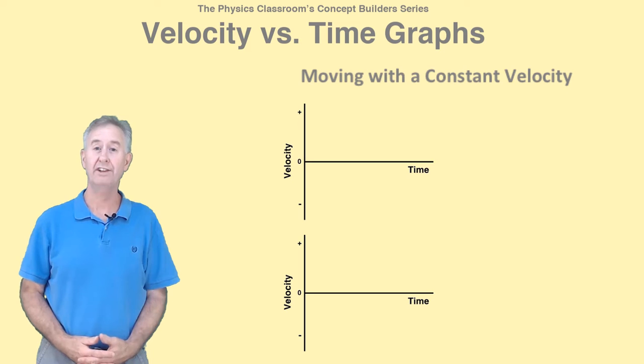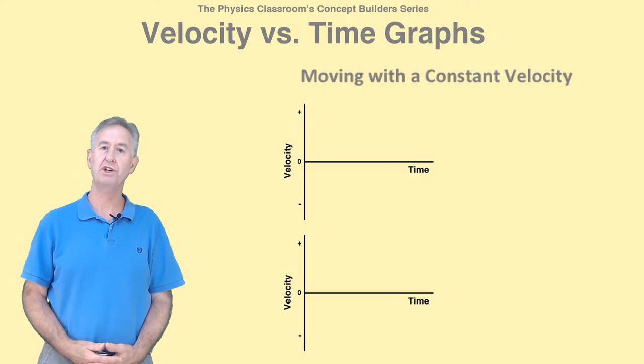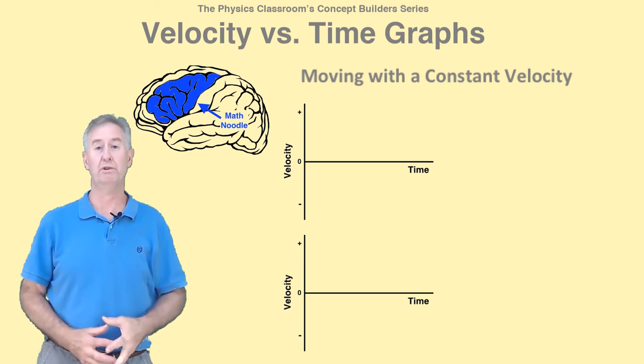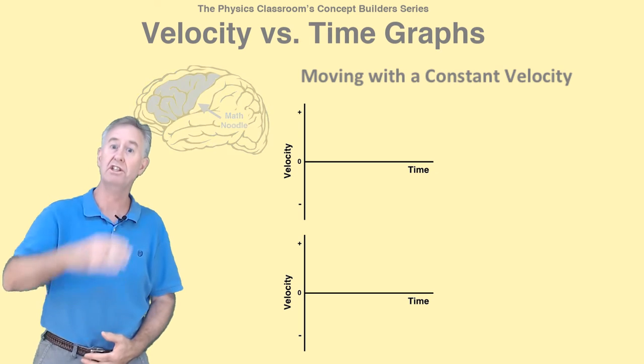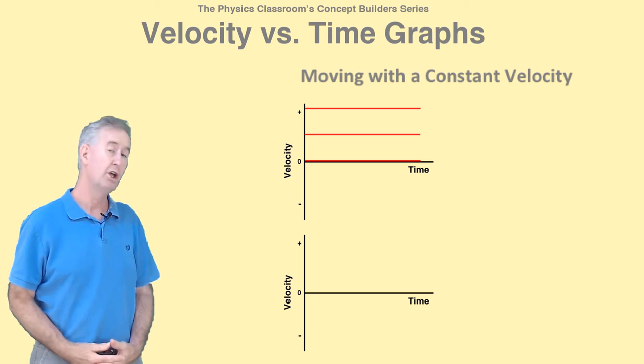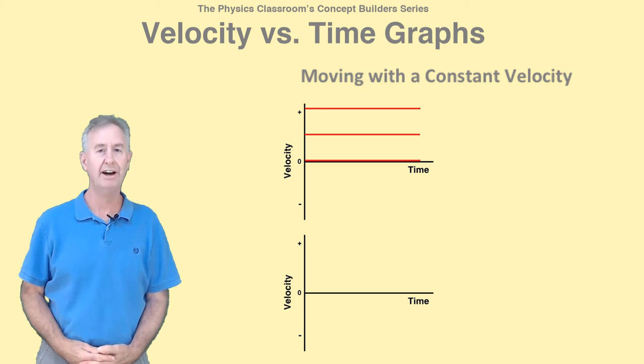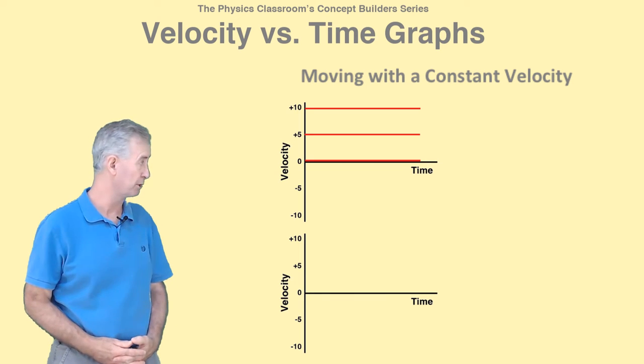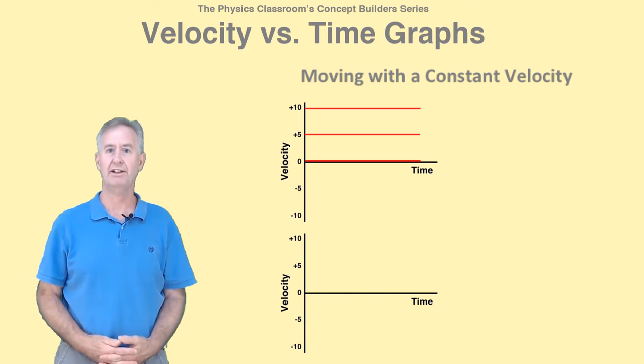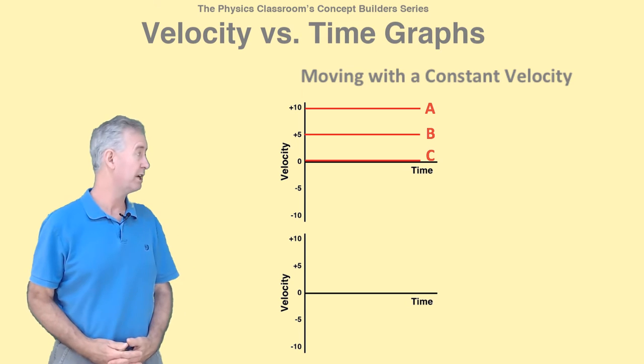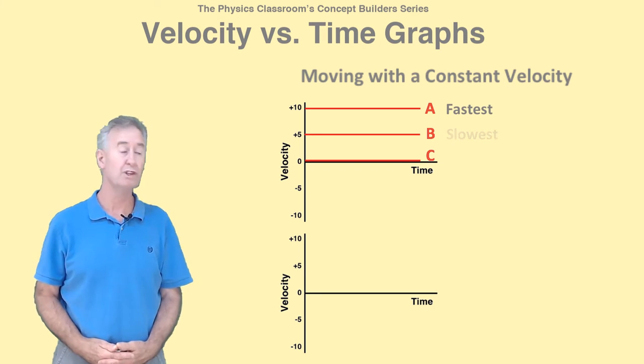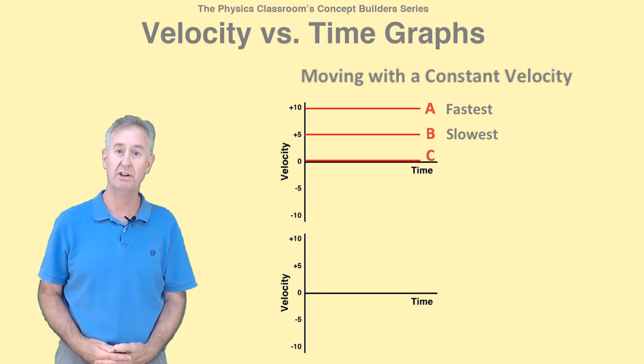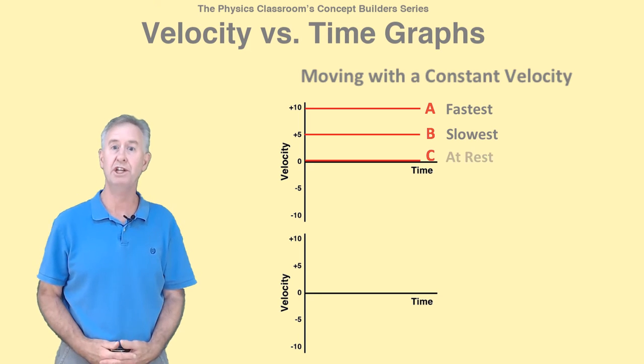Some objects move with a constant velocity, others are accelerating or changing their velocity. Using your math noodle, you would reason that a constant velocity motion would be represented by a line that keeps the same velocity value, like these lines here. Horizontal lines represent constant velocity motions. Now consider that there are numbers along the vertical axis. Our three lines represent three different motions. Object A is moving in the positive direction with a speed of 10 meters per second. Object B moves at 5 meters per second in the positive direction. And object C has a velocity of 0 meters per second—it is at rest or not even moving.